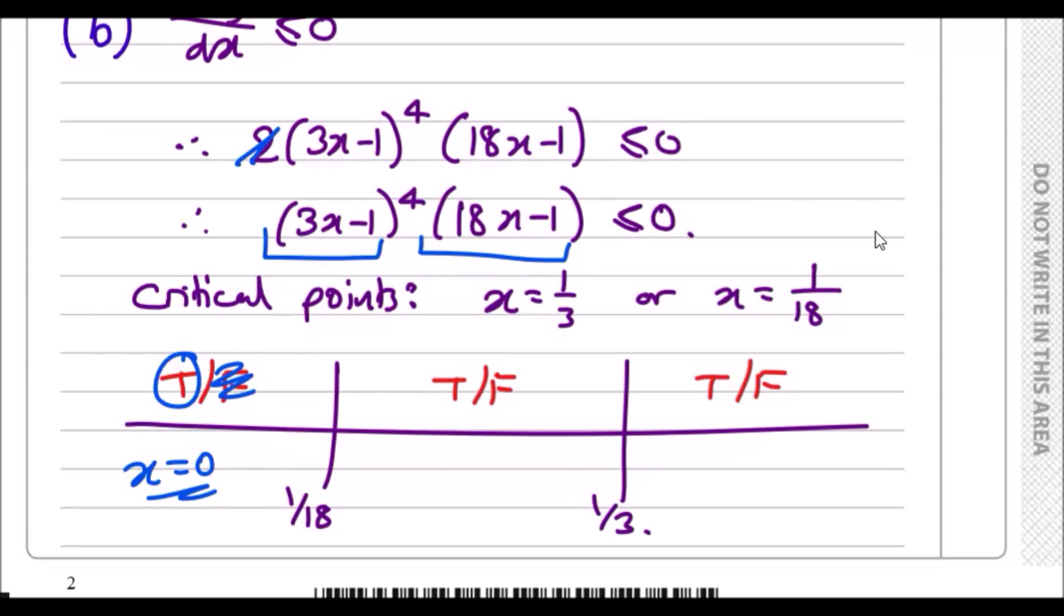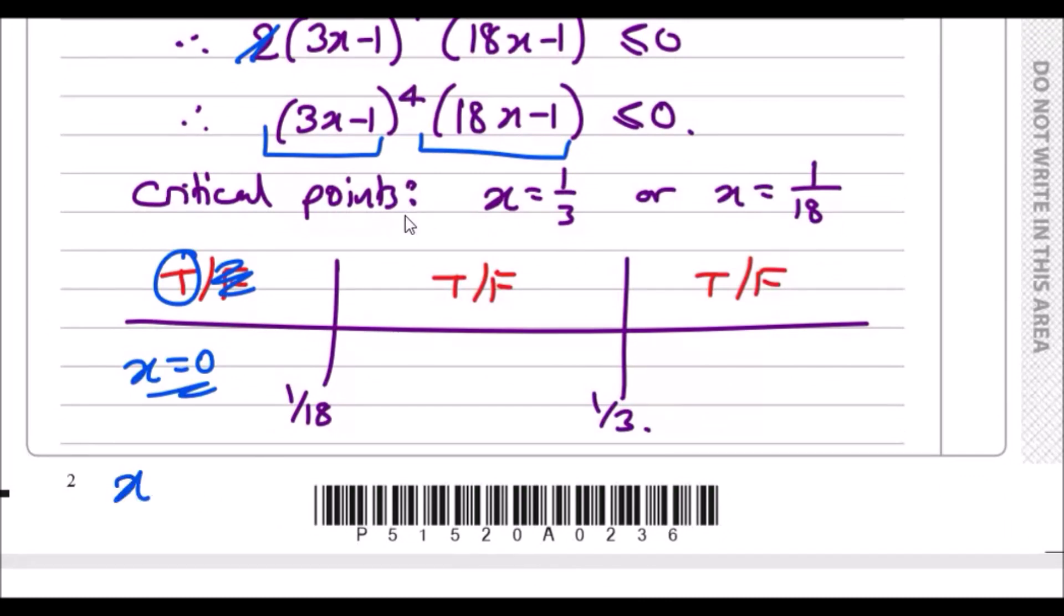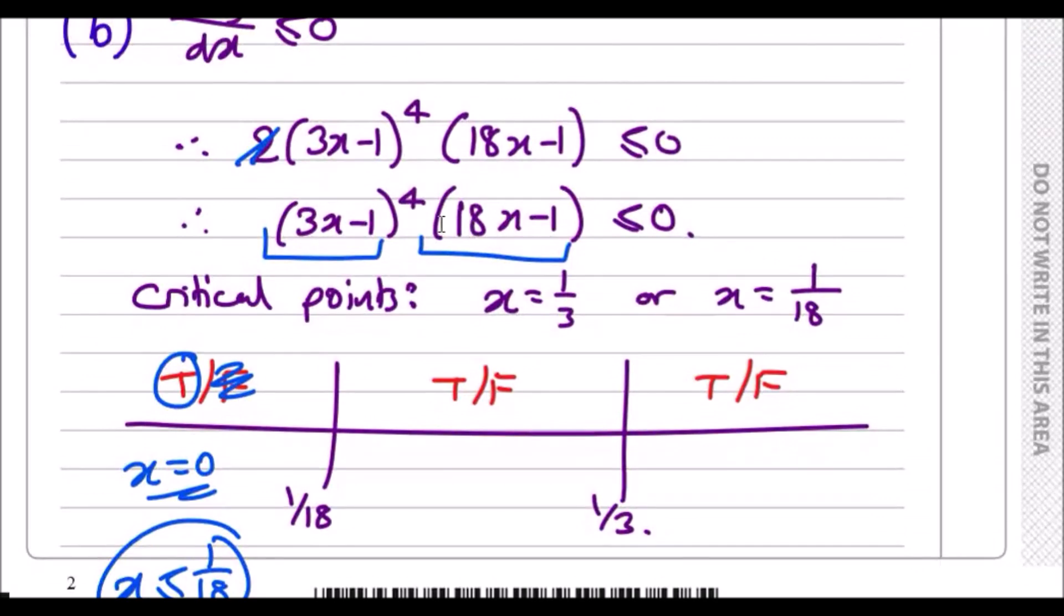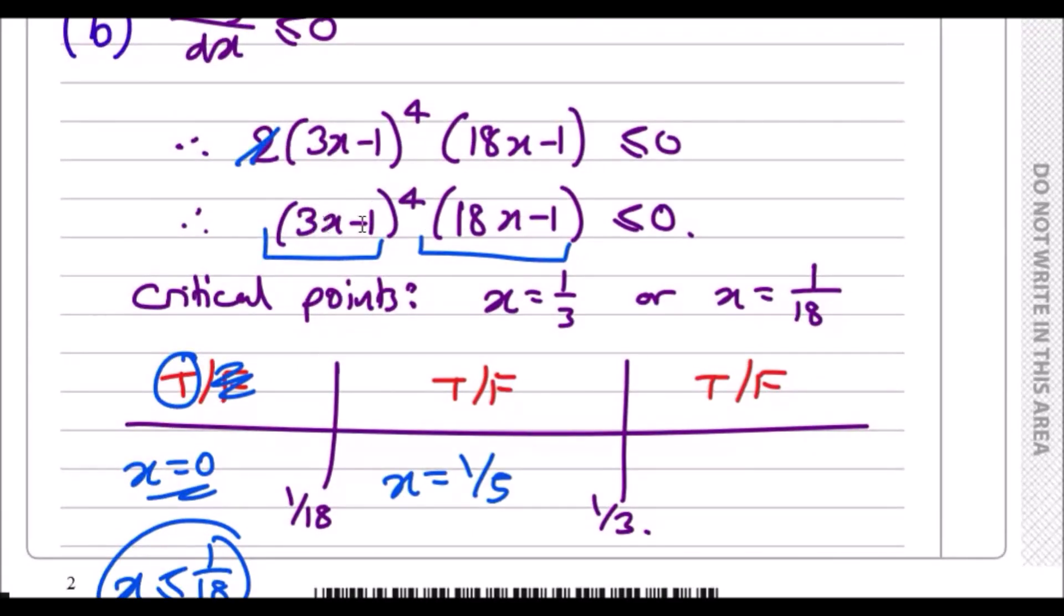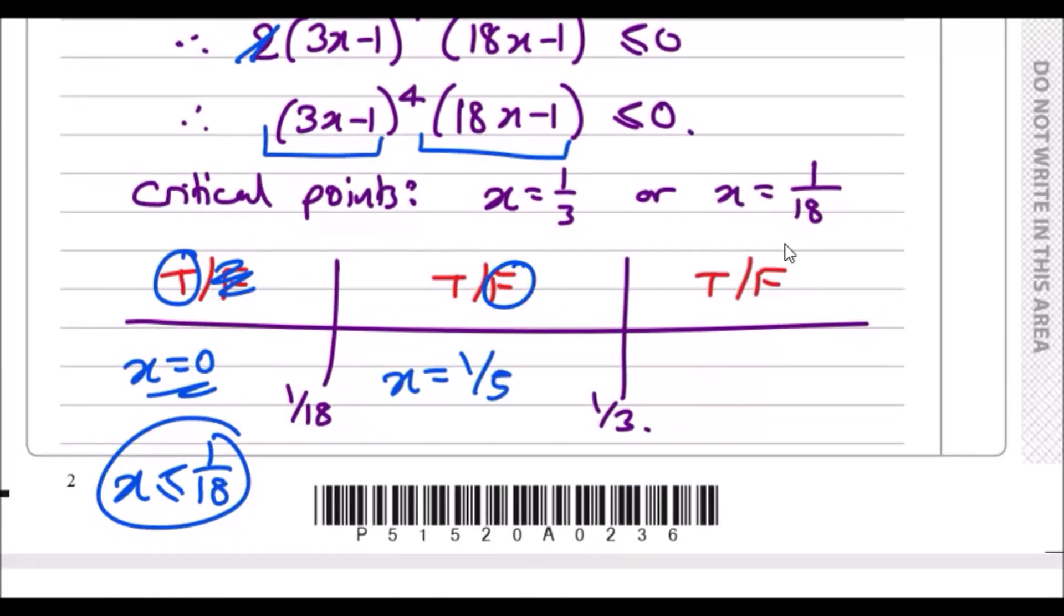This means for values less than or equal to 1/18 is true. So x ≤ 1/18 is one solution. If it's true for one value less than 1/18, it's true for all values because 1/18 is the critical turning point. Between 1/18 and 1/3, pick 1/5. Plugging in 1/5 gives a positive value way bigger than zero, so this is false.